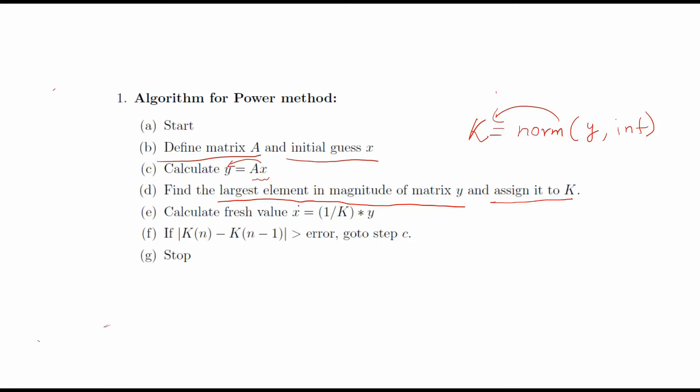So now you started with the initial guess and now you have updated your x with this value. Now what you will do, you will calculate this - this is mainly for the stopping criteria. You are calculating the absolute value of previous minus current. If it is greater than the error, then you will go to this step and repeat until this absolute value is less than error. Then you will stop and come out of the loop.